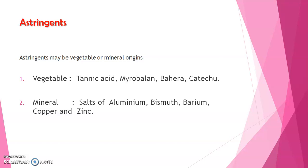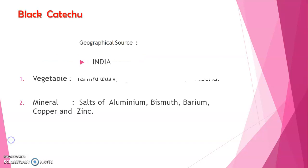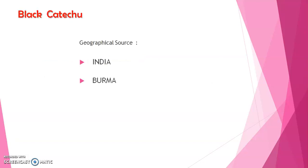Examples of vegetable origin astringents are tannic acid, myrobalan, behera, and catechu. Mineral origin examples include salts of aluminium, bismuth, barium, copper, and zinc. The geographical source for black catechu is India and Burma.